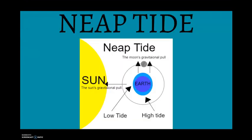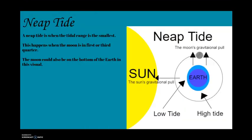The second tidal range is neap tide, which is the opposite of a spring tide. This is when the tidal range is the smallest, so the high tide isn't that high and the low tide isn't that low. It happens when the moon is in the first or third quarter phase, which also means it happens twice a month. The moon could also be on the bottom of the earth in this visual — it happens both ways, just the same as the spring tide.